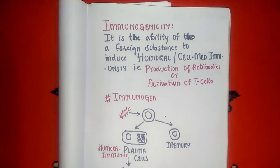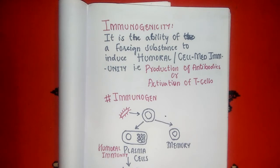That is, the production of antibodies as in humoral immunity, or activation of T cells as in cell-mediated immunity. The substance possessing the immunogenicity property is referred to as an immunogen. So basically, immunogenicity is a property of a substance which induces the production of antibodies in humoral immunity or the activation of T cells in cell-mediated immunity.